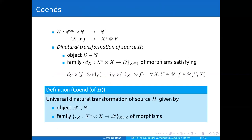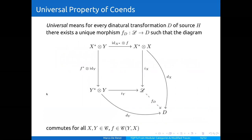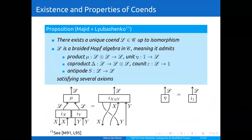Then I told you what a co-end is for this special functor called the inner hom functor. This is a magical object that satisfies some universal property. I told you a little bit about this property and recalled a result by Majid and Lyubashenko that tells you that this very nice object always exists when the category C is modular.